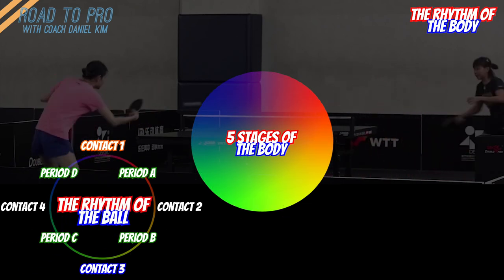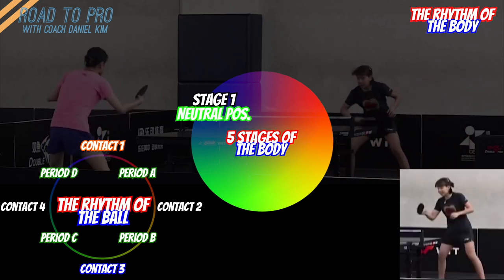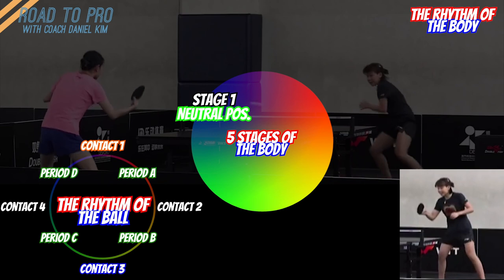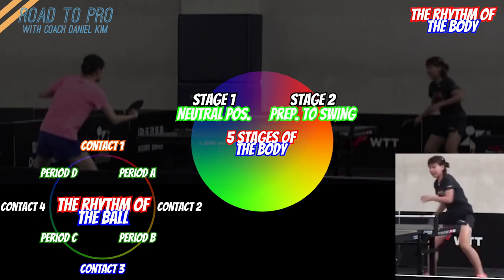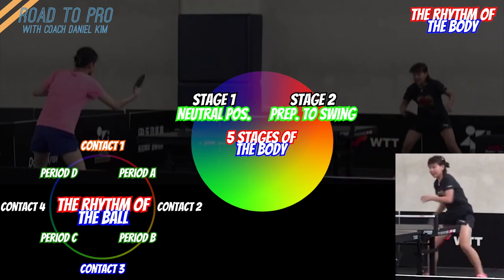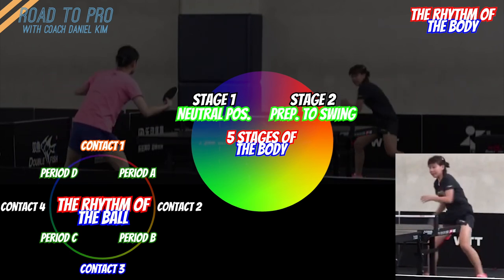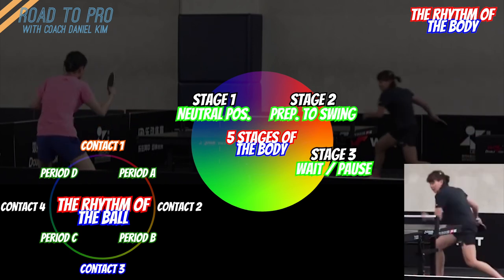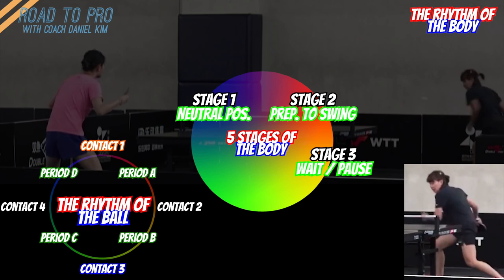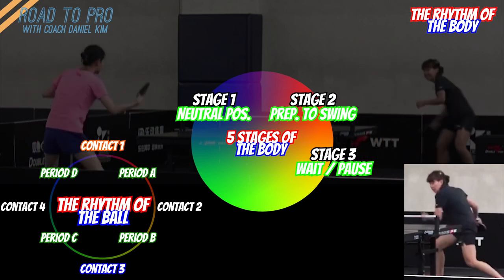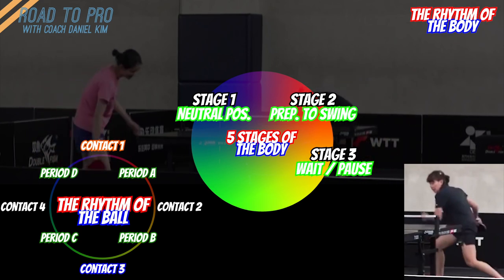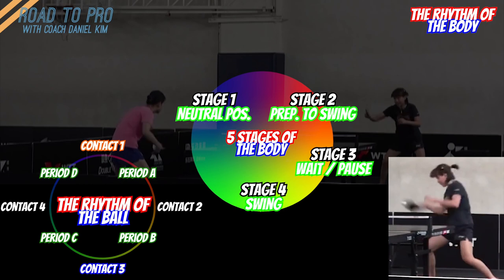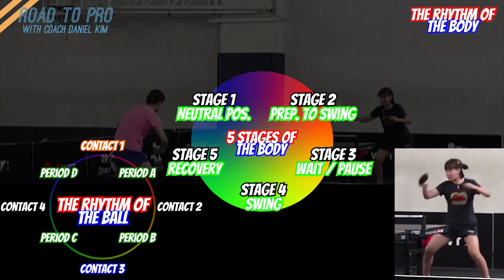Then we have five stages for the body's rhythm. Stage 1: neutral position — this is the optimal ready position for you to reach anywhere you need to. Stage 2: prepare your swing — this is where you prepare to swing for any stroke, and remember that your feet and body move into position first, not the arm. Stage 3: the pause — after you prepare to swing, you need to have a pause or wait for the perfect contact point; this pause is very short, almost a split second, but it's crucial for consistency and power. Stage 4: swing to contact — this is where you strike the ball and follow through. Stage 5: recovery — this is where you recover after your stroke to get back to stage 1.